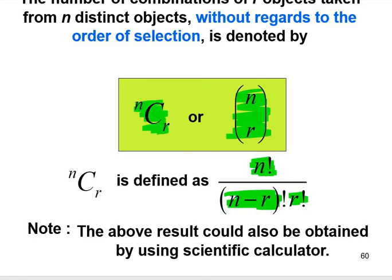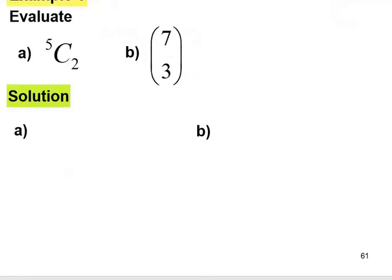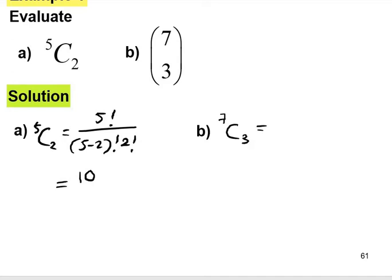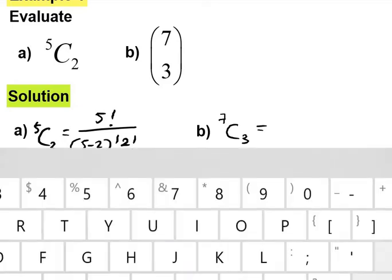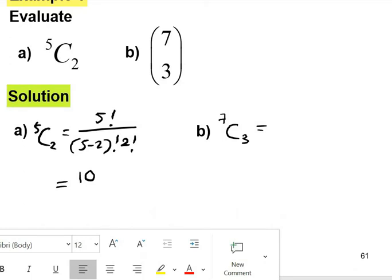For example, we want to evaluate 5C2. The formula is 5 factorial over 5 minus 2 factorial times 2 factorial according to the formula, and then we can use calculator to evaluate the value. The answer is 10. For question b, to evaluate we can directly use calculator also. 7C3 by using calculator equals 35.